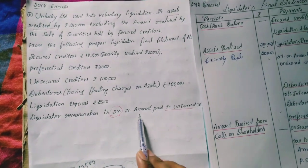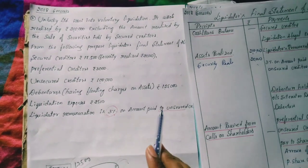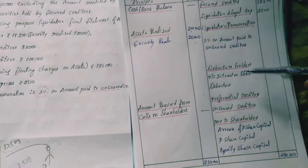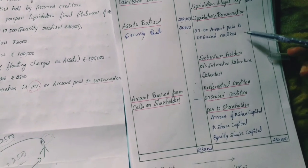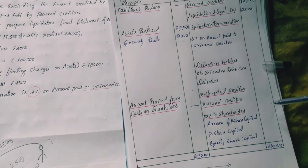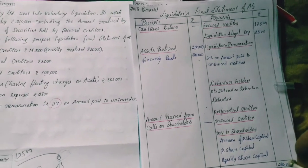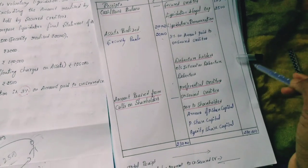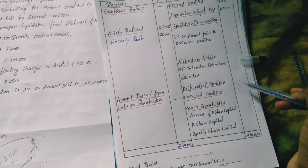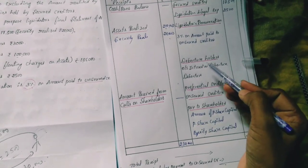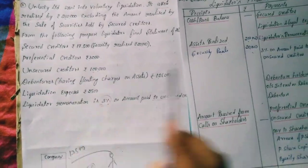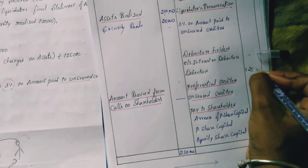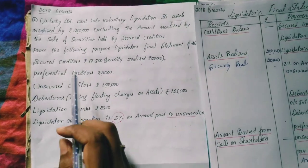Liquidator's remuneration is 3% on amount paid to unsecured creditors. Calculate 3% on the unsecured creditors amount. Now check debentures: debenture value is Rs.1,25,000. Next check preferential creditors.